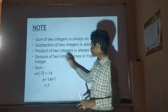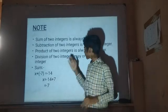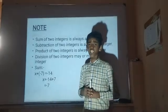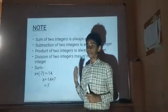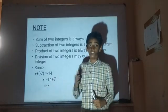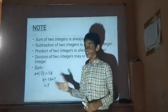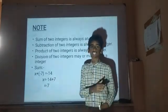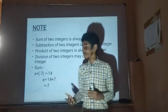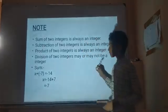Division of two integers may or may not be an integer. For example, 4 divided by 2 is equal to 2, which is an integer. But 4 divided by 0 — anything divided by 0 is undefined — so these statements are applicable here.